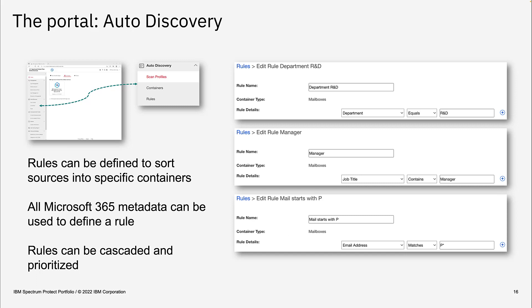If you generate multiple rules — as I did here: the first for department R&D, the second for folks with the job title containing 'manager', and the third for all mailboxes starting with P — you can cascade these rules. They are executed top-down, so the first rule has the highest priority, followed by the second and third. If a mailbox matches the first rule and is part of department R&D, the second and third rules will not apply, and the mailbox will automatically be sorted into the container for department R&D.